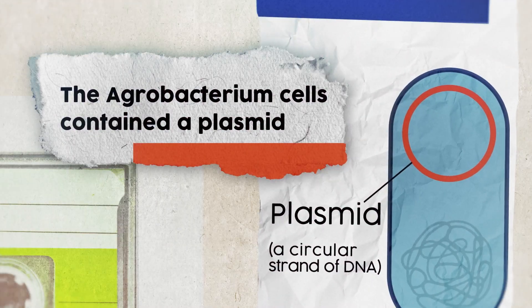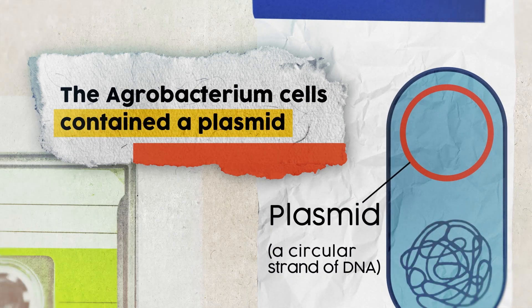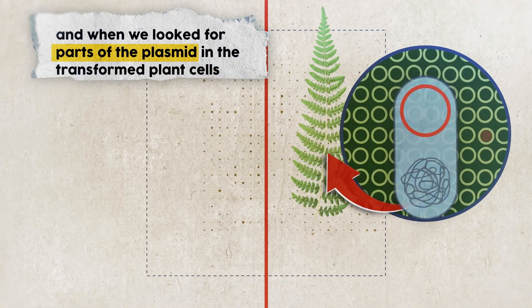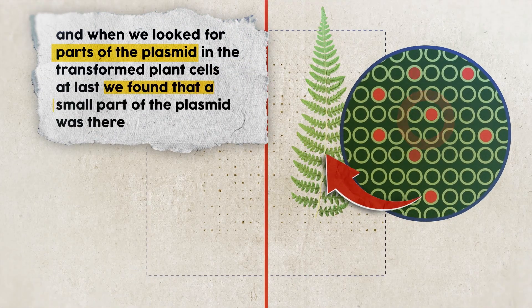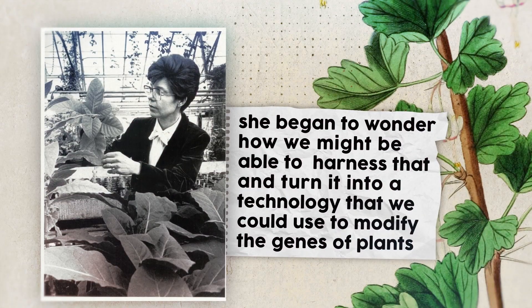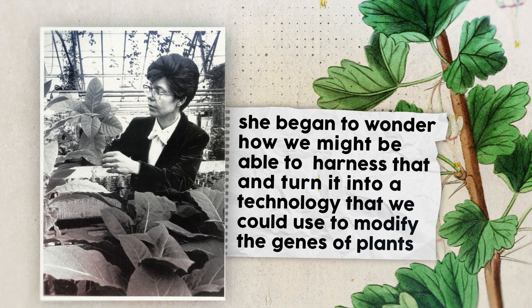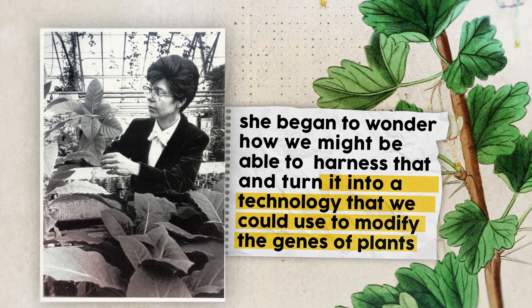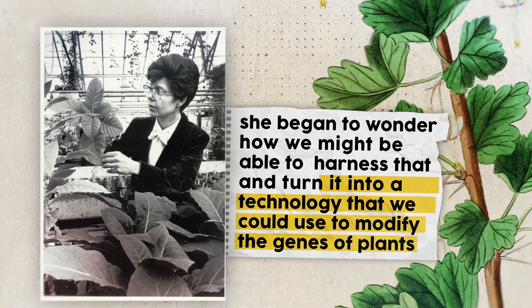That's really where the field of genetic engineering of plants came from. The agrobacterium cells contained a plasmid, and when we looked for parts of the plasmid in the transformed plant cells, at last we found that a small part of the plasmid was there. Once it became apparent that agrobacterium knew some secrets about how to modify DNA that we didn't know about, she began to wonder how we might be able to harness that and turn it into a technology to modify the genes of plants.